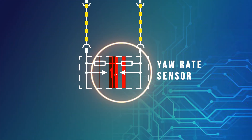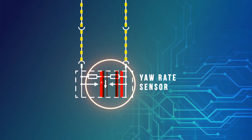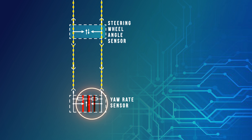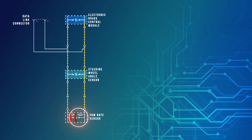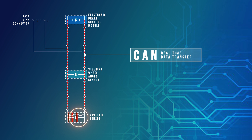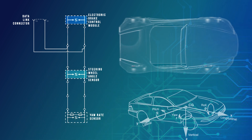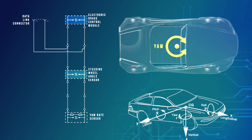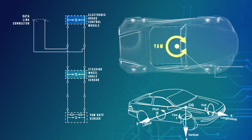A fault within the URAID sensor or circuit will prevent the operation of the ESP. This system utilizes CAN for real-time data transfer between the various modules. A URAID sensor is used to measure the angular velocity of the vertical axis of the vehicle, then relay this data back to the ESP module.